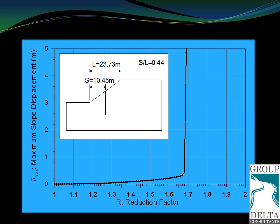As the strength of the soil is reduced — divided by the reduction factor R — the displacements on the slope increase. At the beginning they increase by a small amount, but once we reach about 1.68, the displacements become very quickly very large; they increase asymptotically. This maximum reduction factor of about 1.68 is the factor of safety of the slope, because you cannot reduce the strength by more than 1.68.